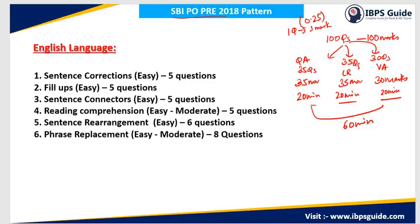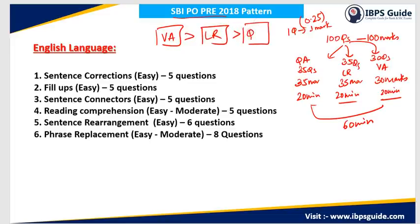The order in which these three sections were presented was: first, verbal ability questions, followed by logical reasoning, and at the end, quantitative aptitude. So it was first 20 minutes verbal ability, then 20 minutes logical reasoning, followed by 20 minutes quantitative aptitude. This was the basic pattern of SBI PO Pre-2018 exam.